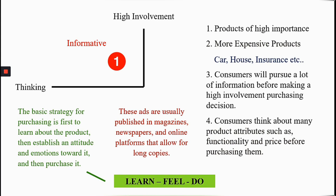The first quadrant is where high involvement versus thinking takes place. Products of high importance fall under this quadrant — more expensive products such as cars, houses, and insurance. Consumers who want to purchase these products will pursue a lot of information before making a high involvement decision, because all of these products require more information to be processed before arriving at a buying decision.